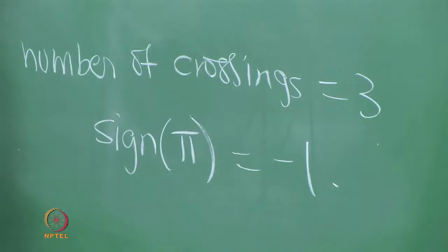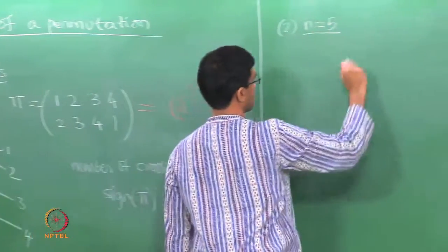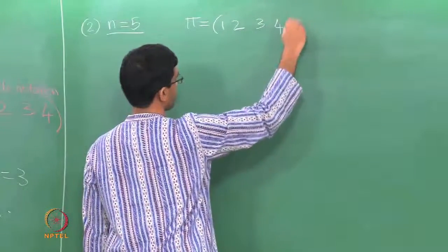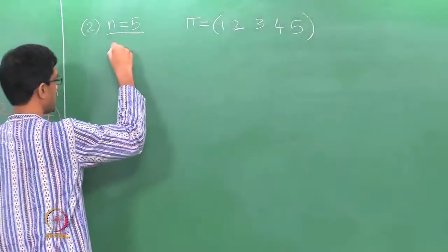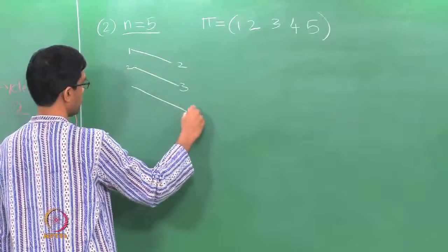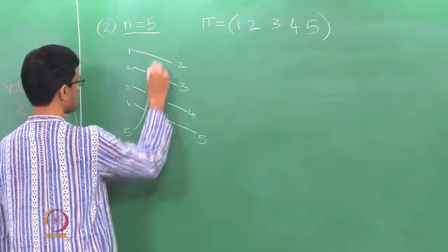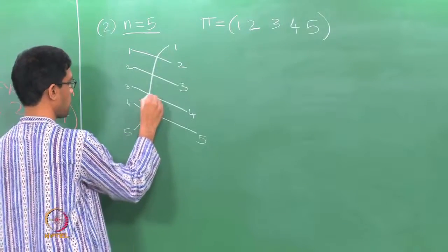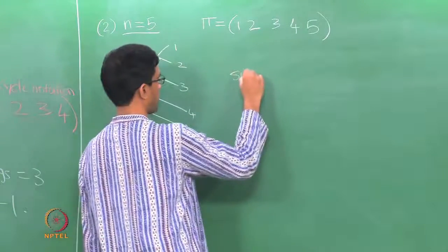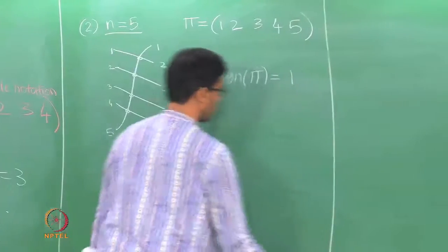Similarly, if you draw the diagram for the 5-cycle — take pi to be the cycle where 1 goes to 3, goes to 4, goes to 5, goes back to 1 — and draw its tangle, the crossings count as 1, 2, 3, 4. So there are 4 crossings, and therefore this permutation is even.